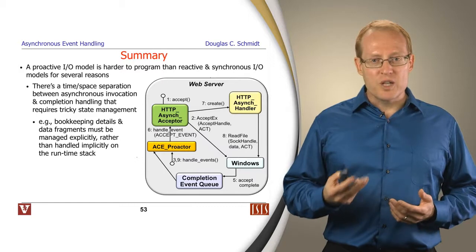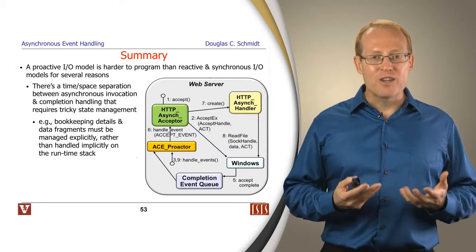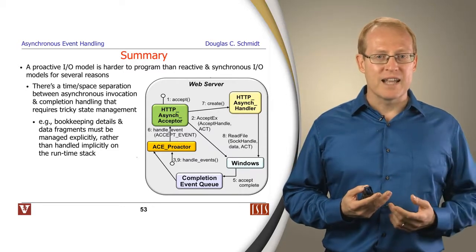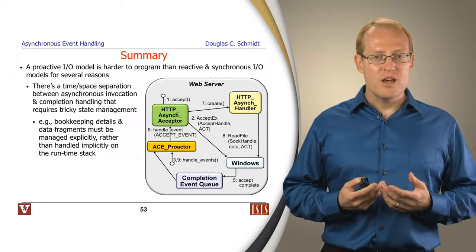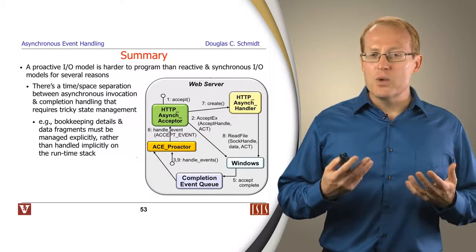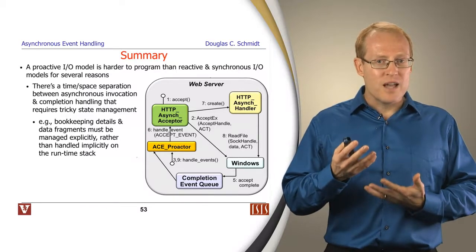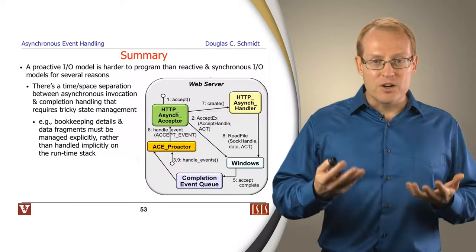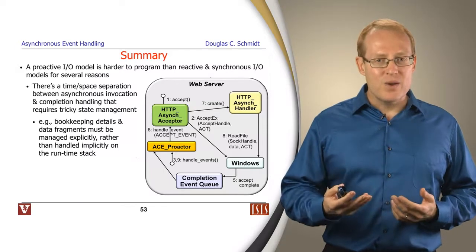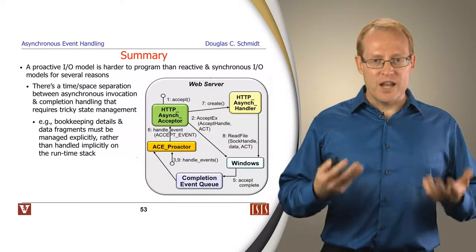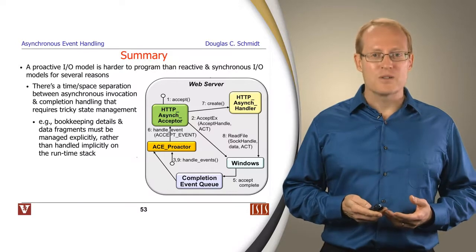To summarize this part in the module, proactive IO models are more complicated. They are inherently more complicated to program than synchronous event handling and synchronous threading because of this separation in terms of time and space from the initiation and the completion. Things that you historically would have handled by implicit information stored in the runtime stack, say in the activation record when you made a blocking function call, that kind of information can no longer be stored implicitly on the stack, but instead you have to store it explicitly using a variety of different data structures, some of the ones we're talking about here, some of which, such as asynchronous completion tokens, we'll talk about in later parts of this module.